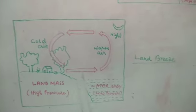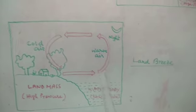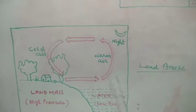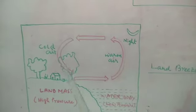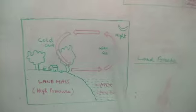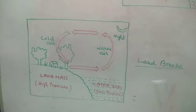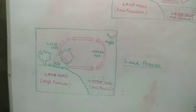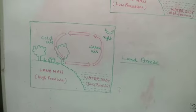In the low pressure area, the temperature is high, so the air goes upward, cools down, and comes back down. This is the total explanation of land and sea breeze. Now regarding monsoon — another important thing to note.